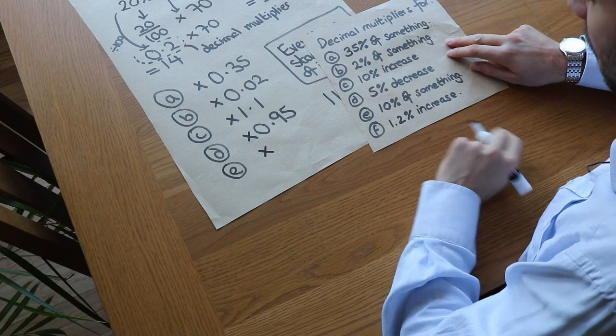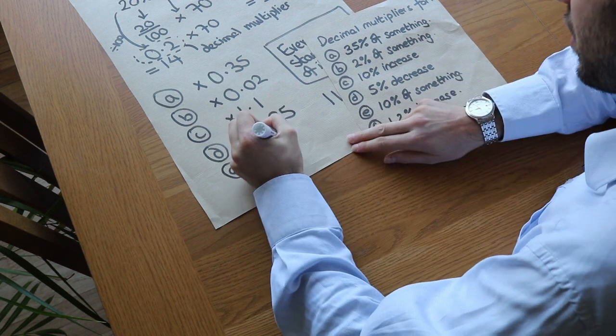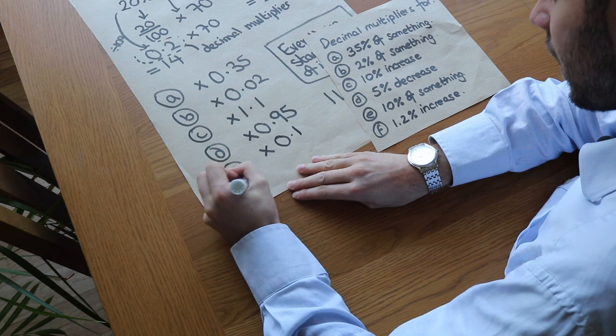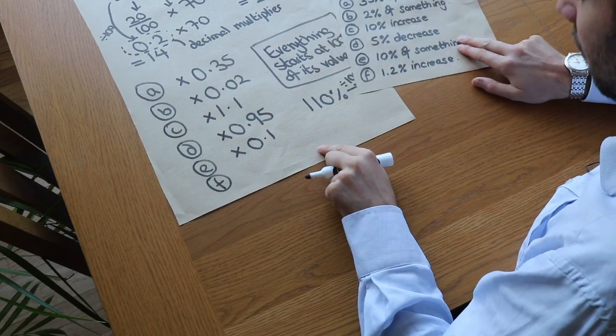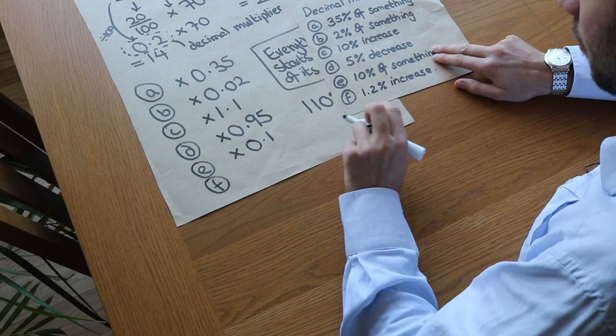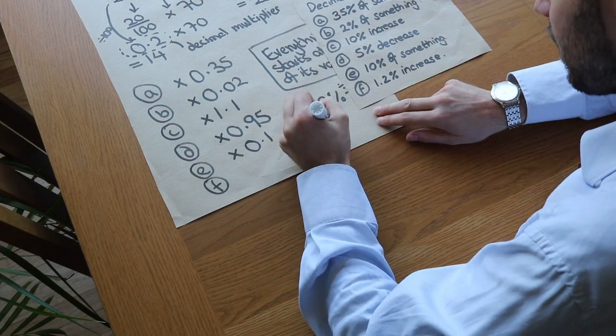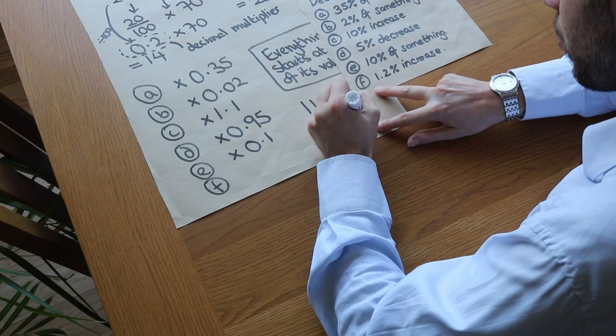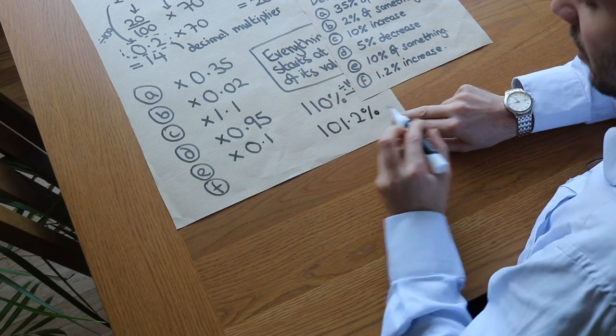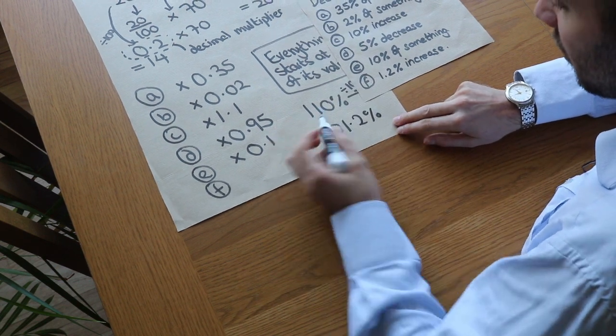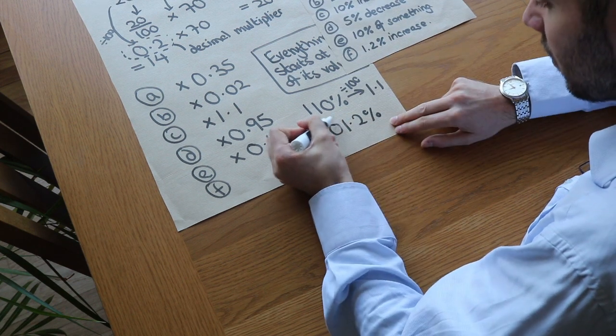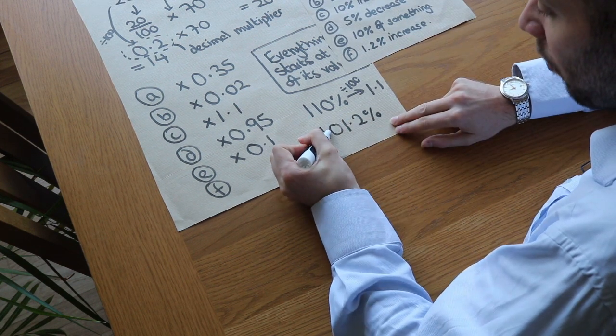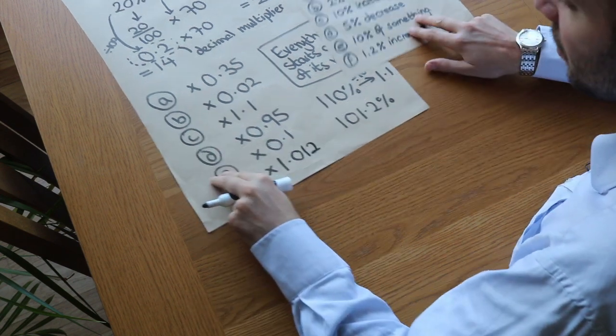What about if we wanted 10% of something? We just times by 10% as a decimal, which is 0.1. And finally, what about a 1.2% increase? If something starts at 100% and goes up by 1.2%, it's now 101.2% of its value. If you move the decimal point twice to divide by 100 to convert it to a decimal - once, twice - we get 1.012.